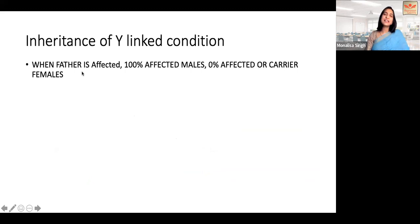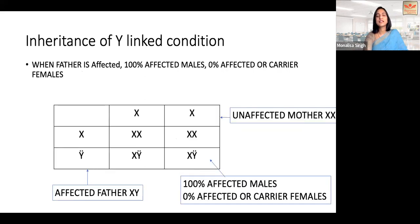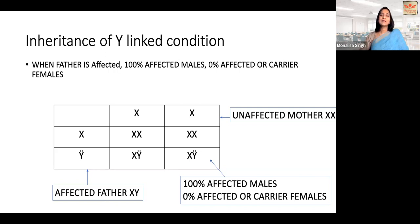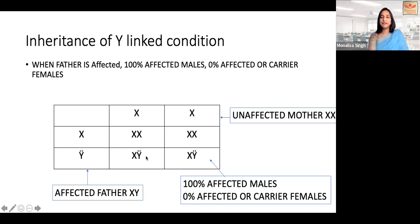For Y-linked conditions, when the father is affected, all sons will be affected and none of the daughters will be affected. Y-linked conditions are not classified as dominant or recessive because there is just one Y chromosome — if he has the mutation, he will have the disease. Examples of Y-linked conditions are azoospermia, specifically AZF (azoospermia factor) deletions, and hypertrichosis. You typically get questions on AZF and Y chromosome micro-deletions, but not on inheritance patterns for Y-linked conditions, because the inheritance is straightforward.